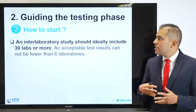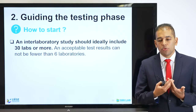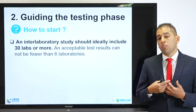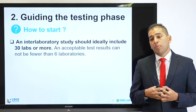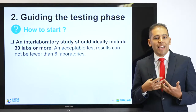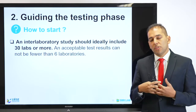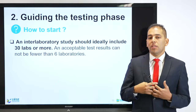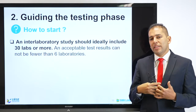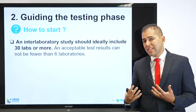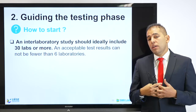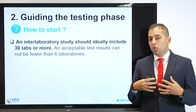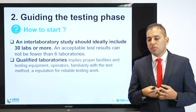Moving to step two: guiding the testing phase. An inter-laboratory study should ideally include 30 or more labs, which means an international approach that avoids bias and goes beyond regional or national labs. In general, an acceptable test result cannot come from fewer than six laboratories. In a round-robin test you can never have less than six laboratories participating; when you have six, seven, or eight, results are considered initial. 30 is sometimes difficult to reach, but this number is important to keep in mind especially if you are working on a global level and want to ensure high quality, consistency, and acceptability.